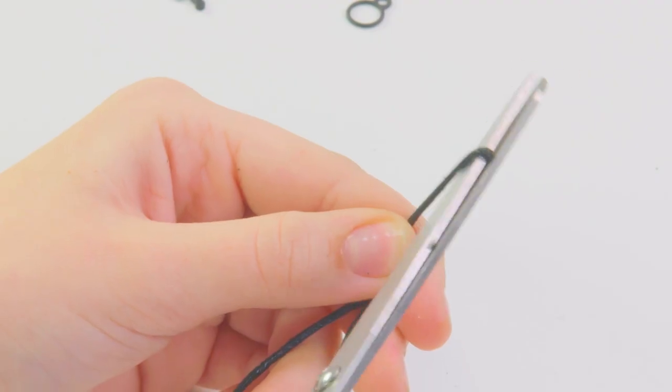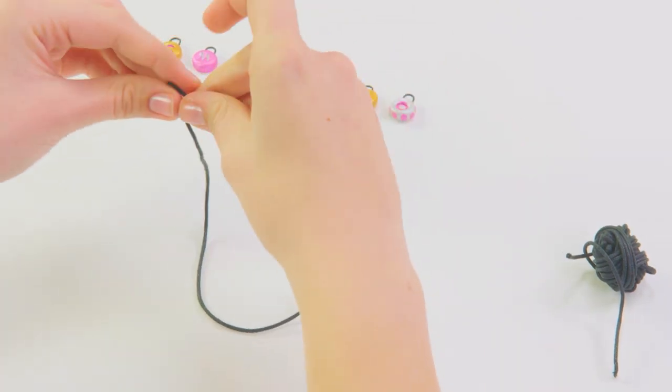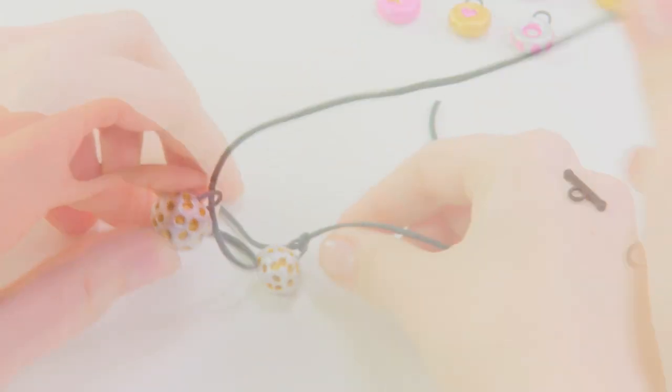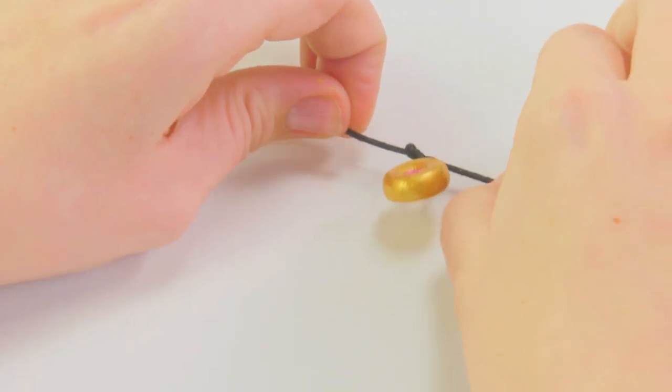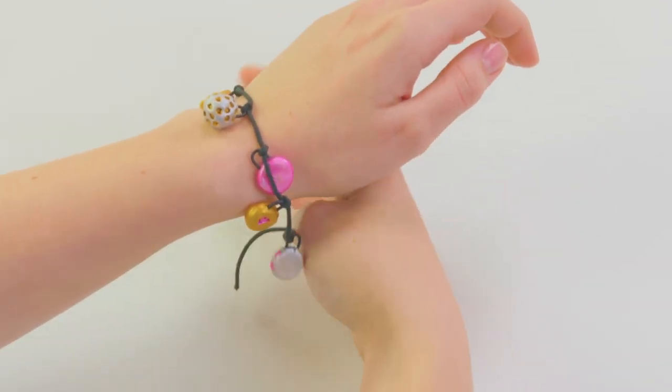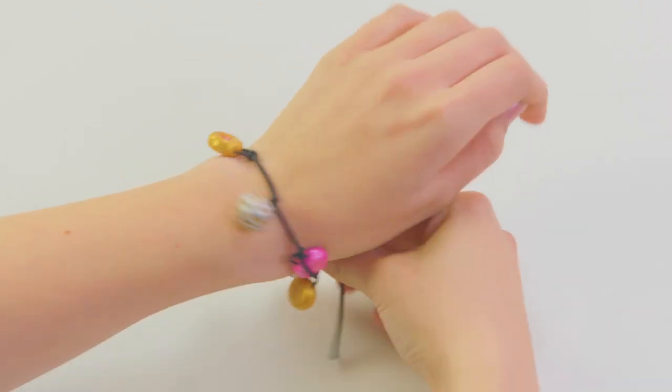Measure and cut 18 inches of cord. Find the center and tie on the first charm loosely, like I've done. Tie on the rest of the charms and leave a little space between each. To make sure your bracelet is long enough, lay it over your wrist. The length is perfect.